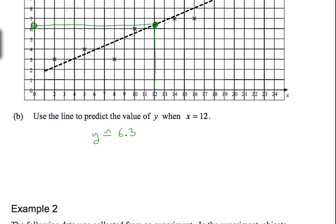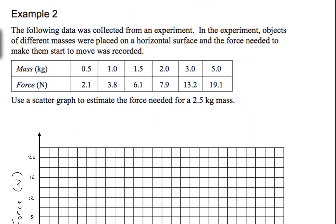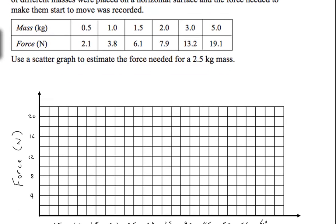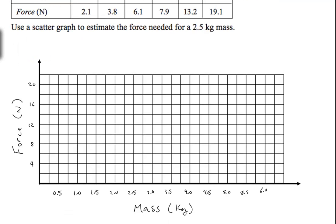Okay, it's a pretty good guess. Example 2. The following data was collected from an experiment. In the experiment, objects of different masses were placed on a horizontal surface, and the force needed to make them start to move was recorded. So just picture a block with some kind of spring scale, and you pull the spring scale, and then whatever mass was required to get it going, that was recorded. And then different masses took different forces to get moving.